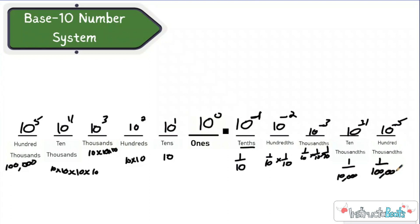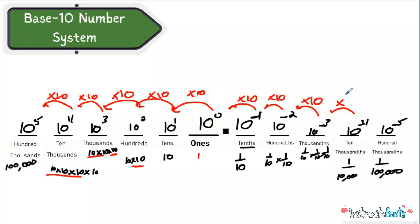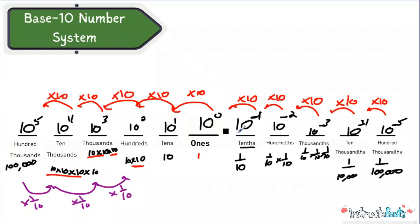So we've talked about this a lot — you're probably tired of hearing it — but there's a reason we're talking about this. As we move to the left, we are getting bigger times ten. That's why I wrote the exponent here. And as we move back to the right, we're getting one-tenth the size — we're actually multiplying by one-tenth or dividing by ten. That is an important distinction right there.